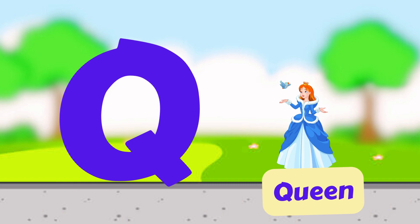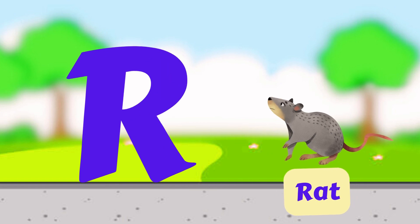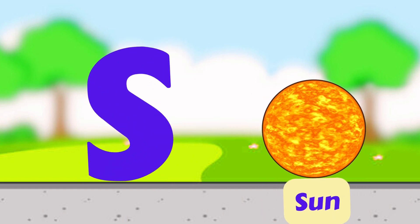P is for Pencil. P, P, Pencil. P is for Piano. P, P, Piano. Q is for Queen. Q, Q, Queen. Q is for Quail. Q, Q, Quail.